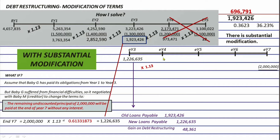1,226,635 times 1.13 equals 1,386,098, which is the balance at the end of year four. There are no deductions because payment only happens at the end of year seven. The journal entry credits loans payable for the increase of 159,463 and debits interest expense for the same amount.